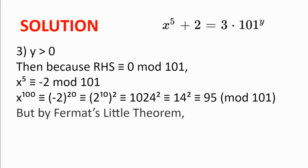But as we've already seen by Fermat's Little Theorem, x to the power of 100 is congruent to 1 modulo 101. And so we get a contradiction. And so there are no solutions when y is greater than 0.